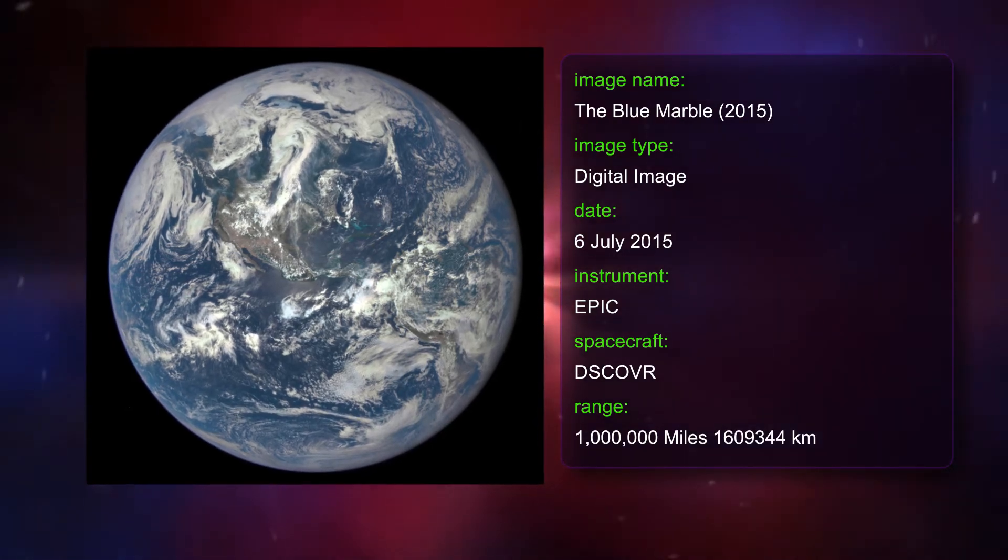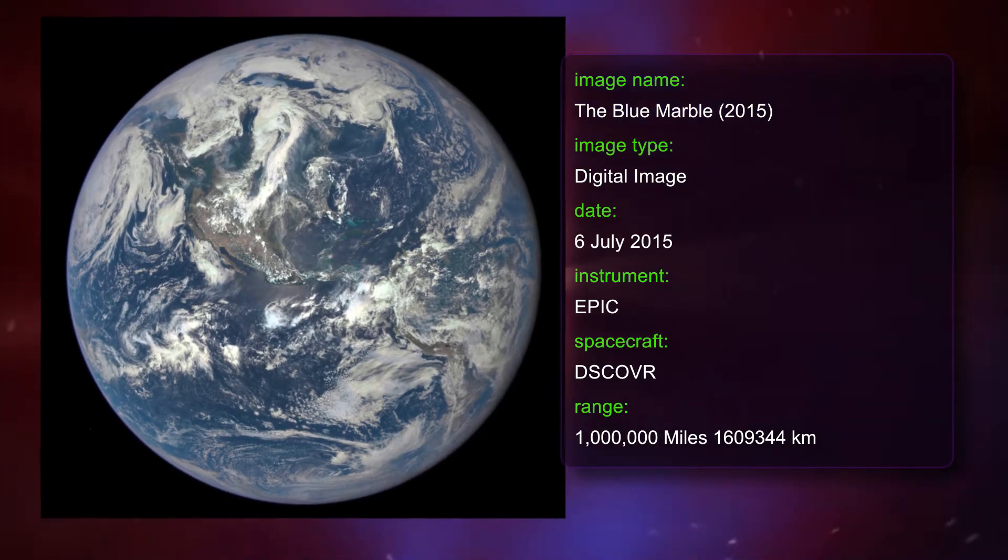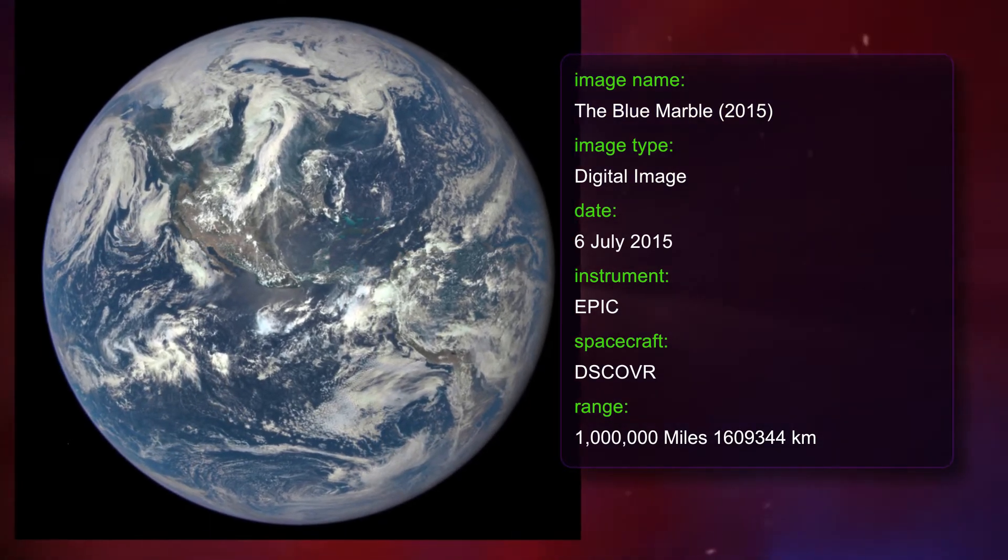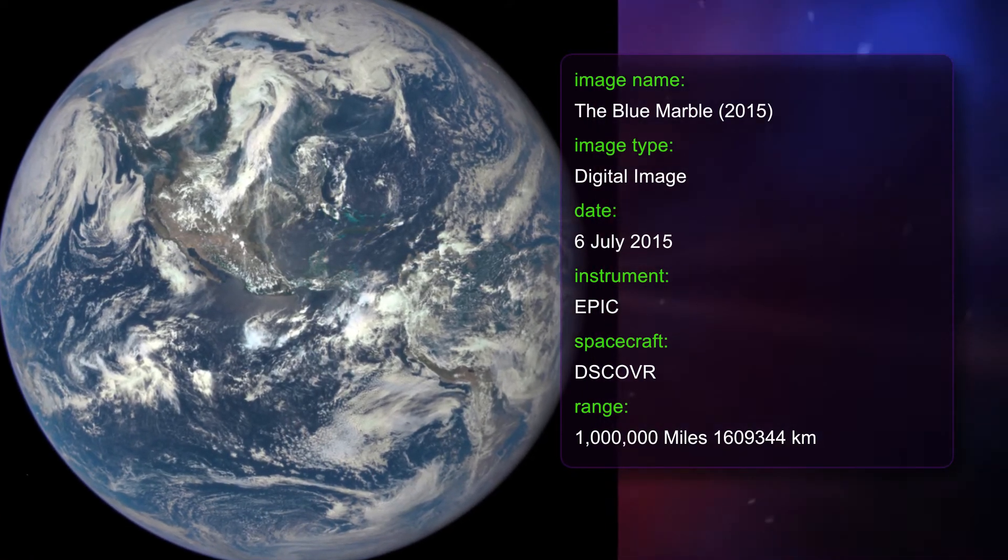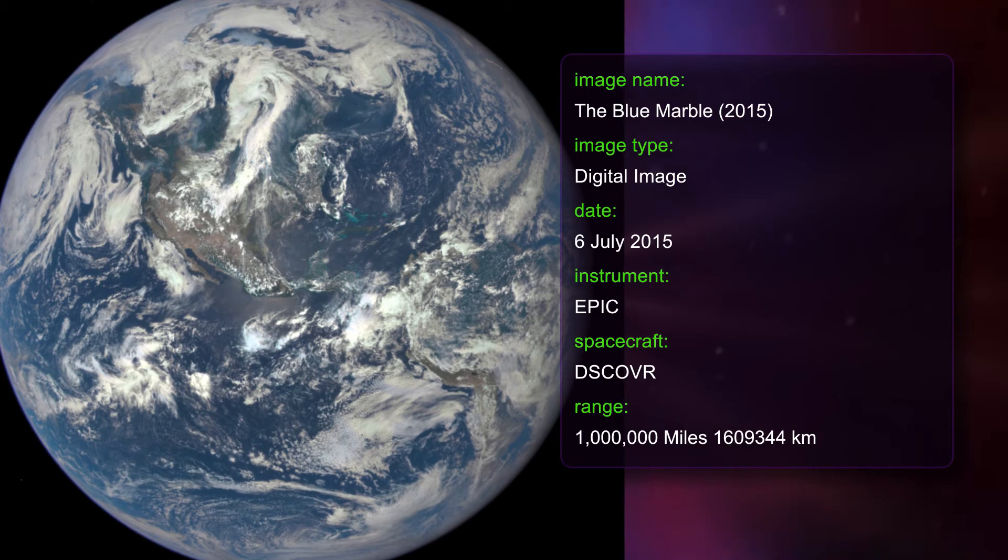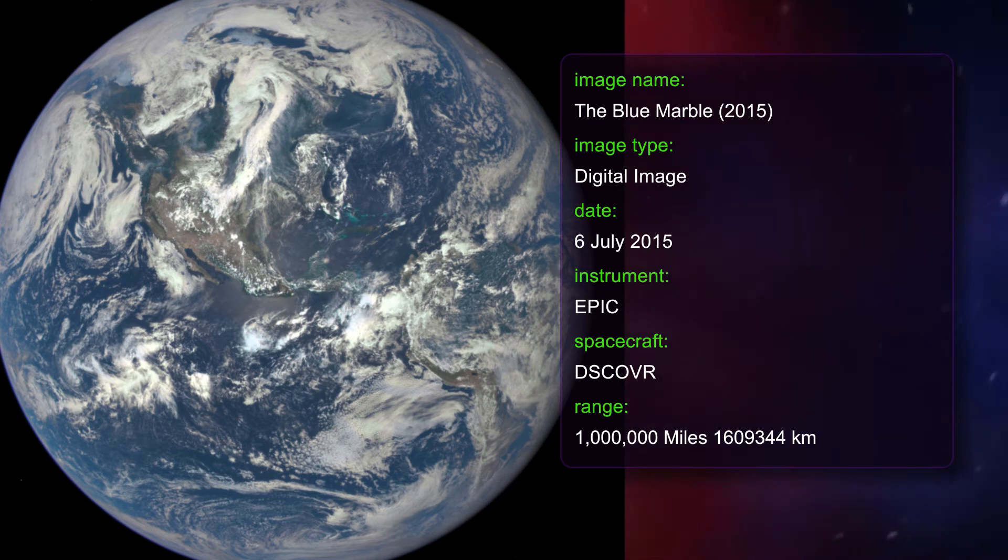And now the last image in our collection, the Blue Marble 2015. This color image of the Earth is from NASA's Earth Polychromatic Imaging Camera, or EPIC, on the Deep Space Climate Observatory, or DSCOVR satellite, which is in a sun-synchronous orbit almost one million miles from Earth.